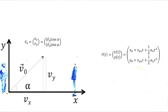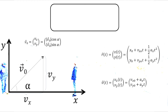Betrachten wir nun nochmal unsere Bewegungsgleichung. Wir haben also den Ort als Funktion der Zeit für ein zweidimensionales Problem, mit einer x-Komponente und einer y-Komponente, sowie die Geschwindigkeit als Funktion der Zeit in x- und y-Komponenten. Der erste Schritt ist, sich anhand der Randbedingungen zu überlegen, wie wir diese Gleichungen weiter vereinfachen können. Da das Koordinatensystem so gelegt wurde, dass der Ball genau im Ursprung lag, können wir x0 und y0 gleich 0 setzen. Da in diesem Beispiel nur die Gravitationskraft wirkt, gibt es keine Beschleunigung in x-Richtung, also ist ax gleich 0.